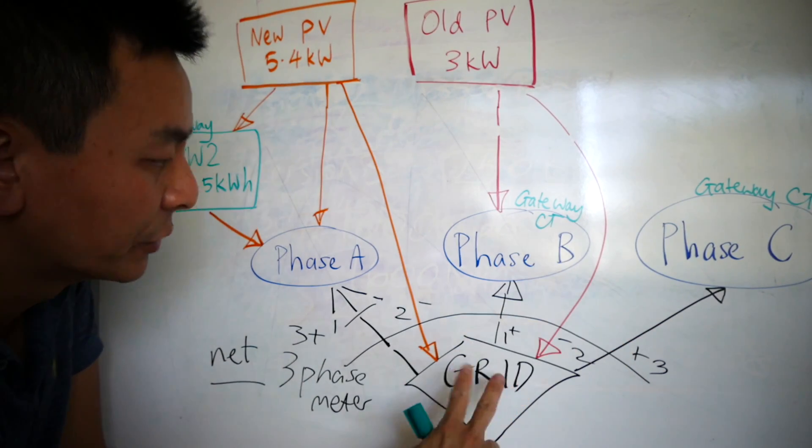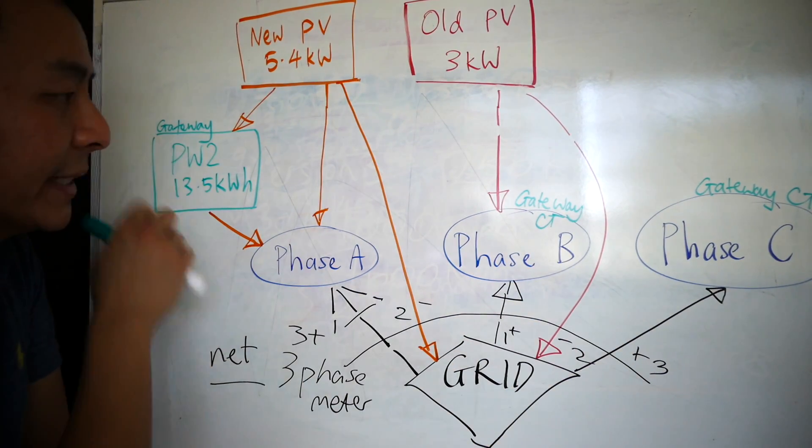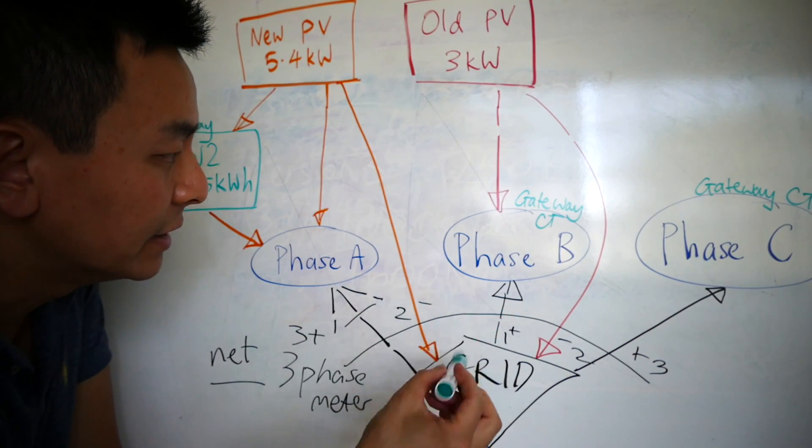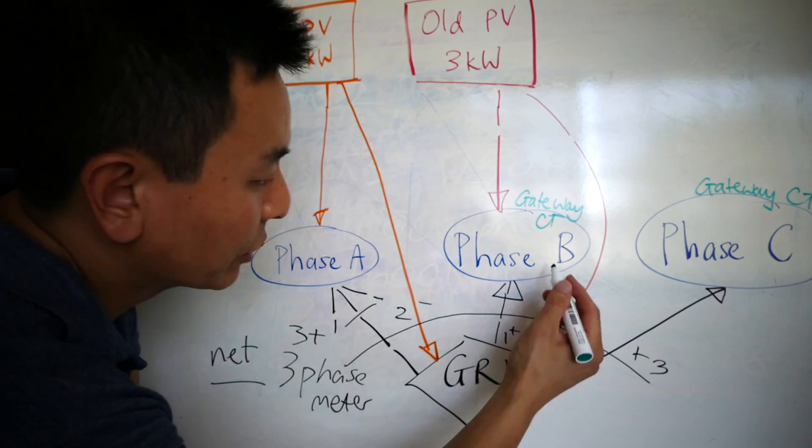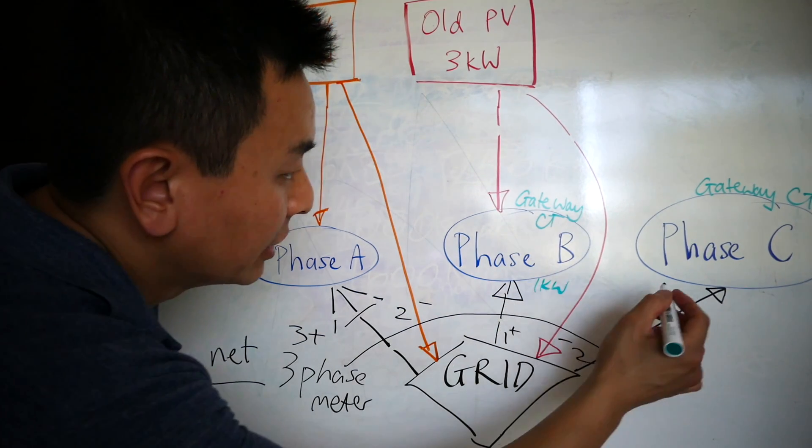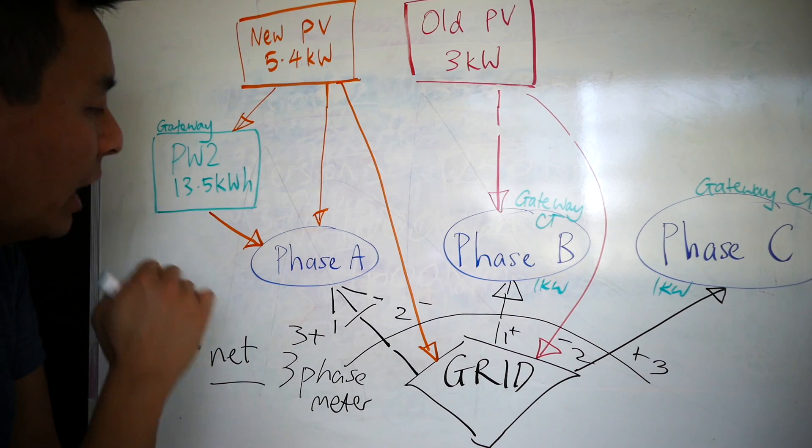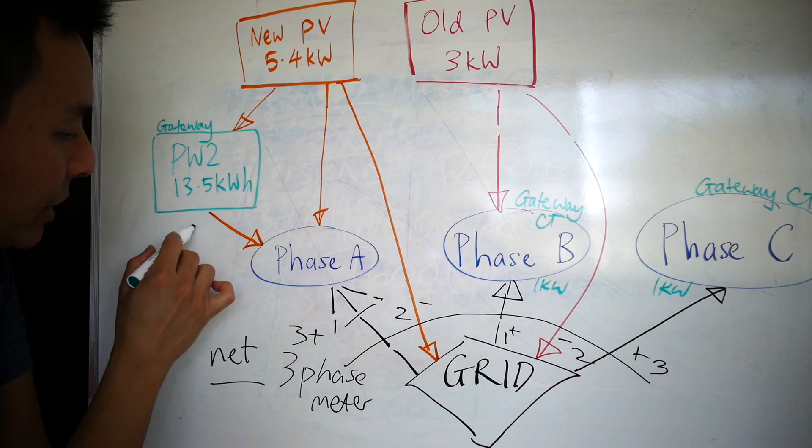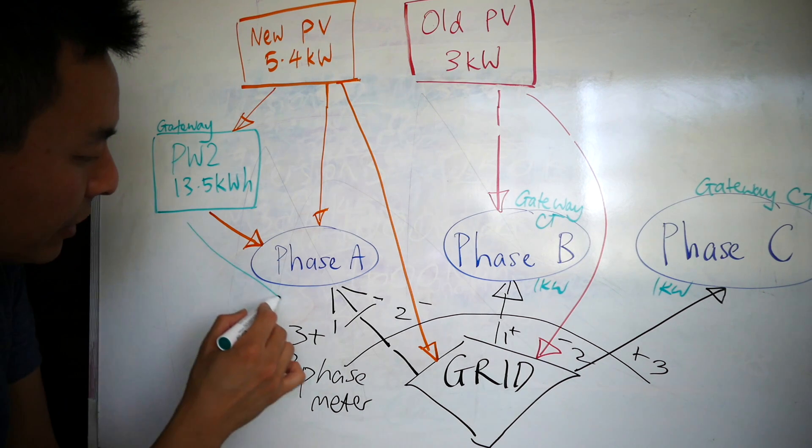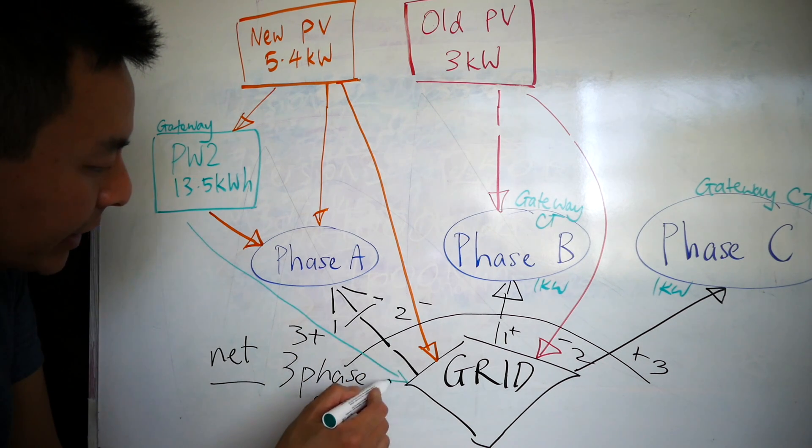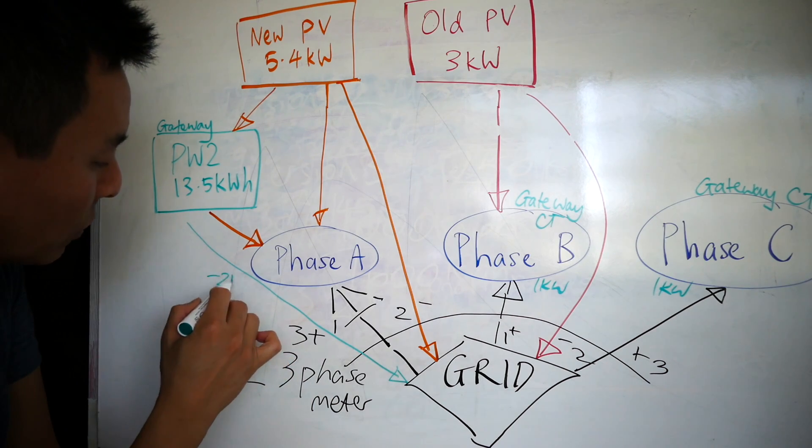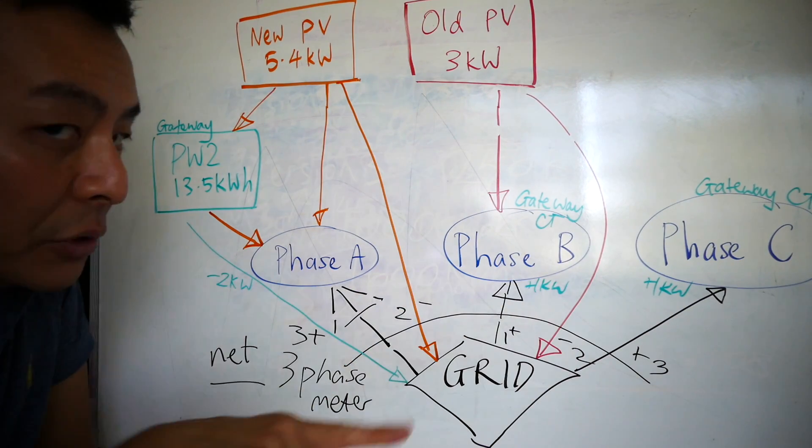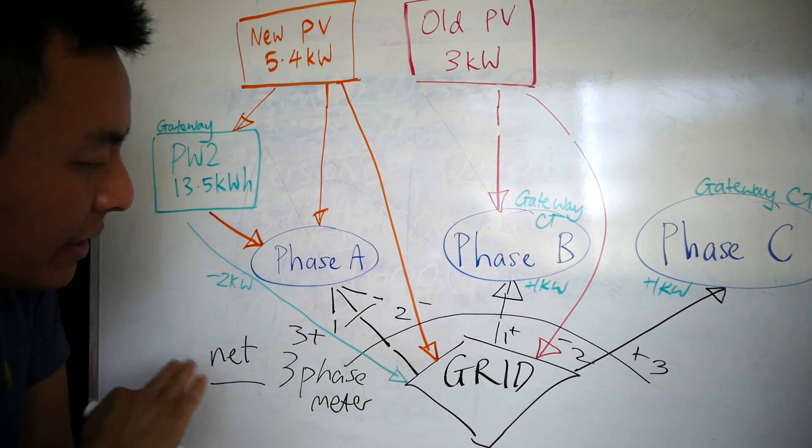These two phases at night use the grid energy, but with the gateway there's something called a CT clamp, which basically is like a little meter for the gateway. Anything that the B phase and the C phase uses from the grid, let's say for example it uses 1 kilowatt and this one uses 1 kilowatt, the Powerwall 2 will sense that using the gateway and discharge 2 kilowatts back to the grid.